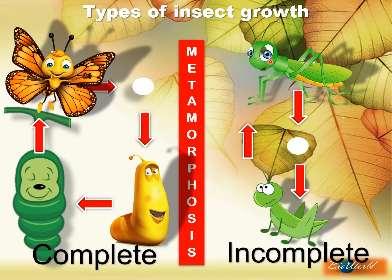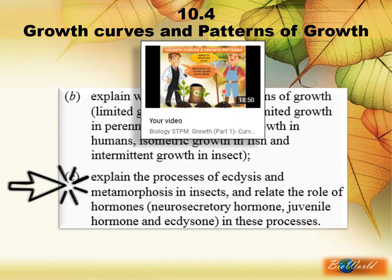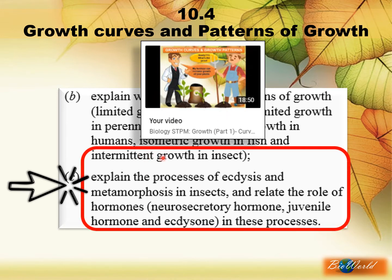Now both these processes are controlled by a set of hormones. Before I introduce you to the hormones, let's look at the STPM syllabus. We are in 10.4 growth curves and patterns of growth, and we have actually covered part B in my video on growth part 1. I have not introduced intermittent growth in insects because I wanted to discuss it together with the process of ecdysis and metamorphosis.